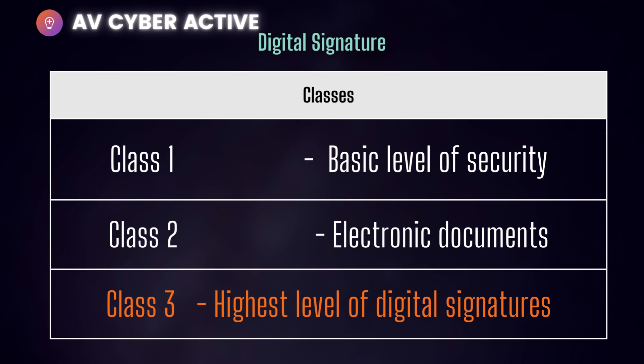Class Three — this is where things get really serious. This is the highest level of digital signatures available. Class Three digital signatures require a person or organization to be physically present in front of the certifying authority to prove their identity before signing. You would use a Class Three digital signature for e-auctions, e-ticketing, e-tendering, or court filings and such environments. The consequences of security failure are very high for Class Three digital signatures.